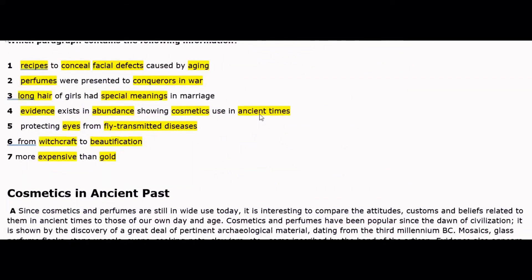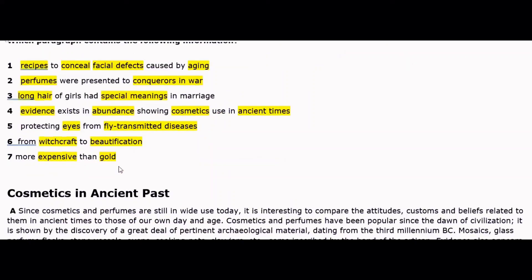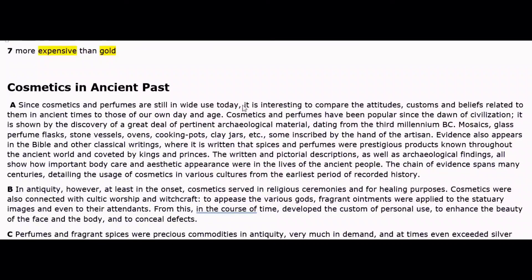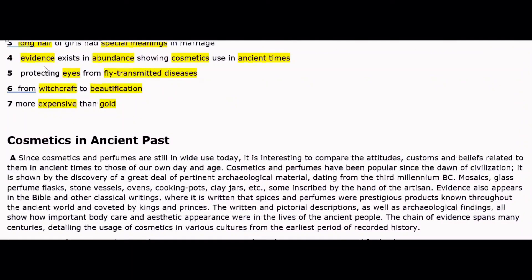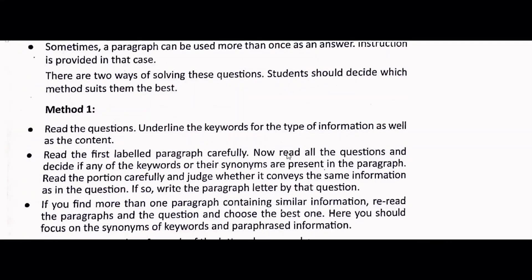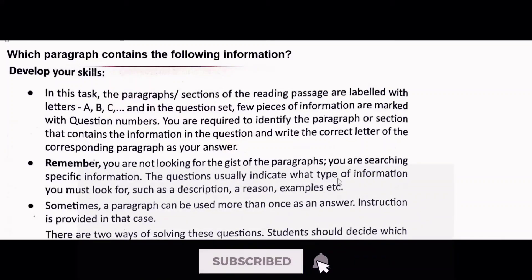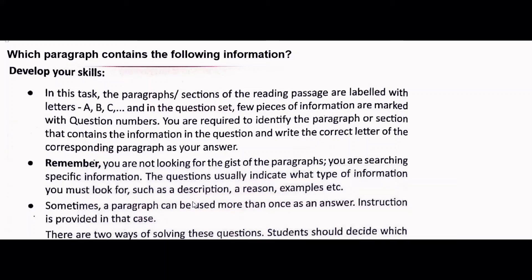In simple terms, all the statements are given and we have to decide which information is in paragraph A, which information is in paragraph B, which information is in paragraph C, paragraph D, and so on — all the paragraphs are given. The next important thing to remember is: you are not looking for the gist of the paragraph. You are searching for specific information. The question usually indicates what type of information you must look for, such as descriptions, reasons, examples, etc.